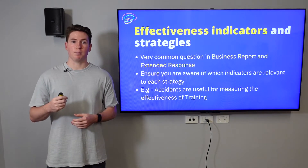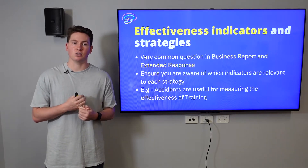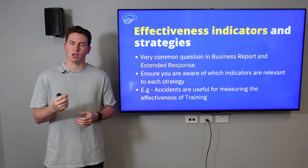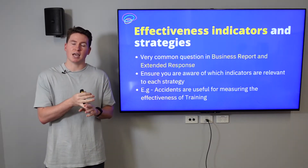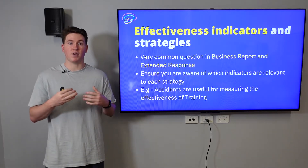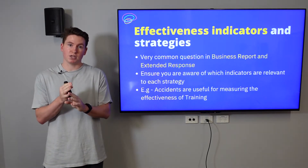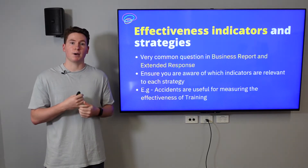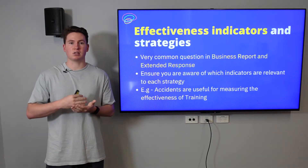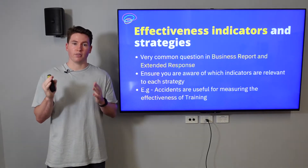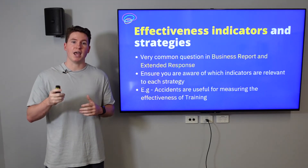A very important theme within the extended response and business report sections of human resources management is the relationship between strategies and effectiveness indicators. Almost every question is going to ask you how we can measure the effectiveness of strategies through these indicators. Understand how accidents might fit with training and development as a measure of its effectiveness, or how staff retention and rates of staff turnover are a direct measurement of how well we reward or train employees. It's really important to plan and associate the two so that you know which indicators you can pair with which strategies.